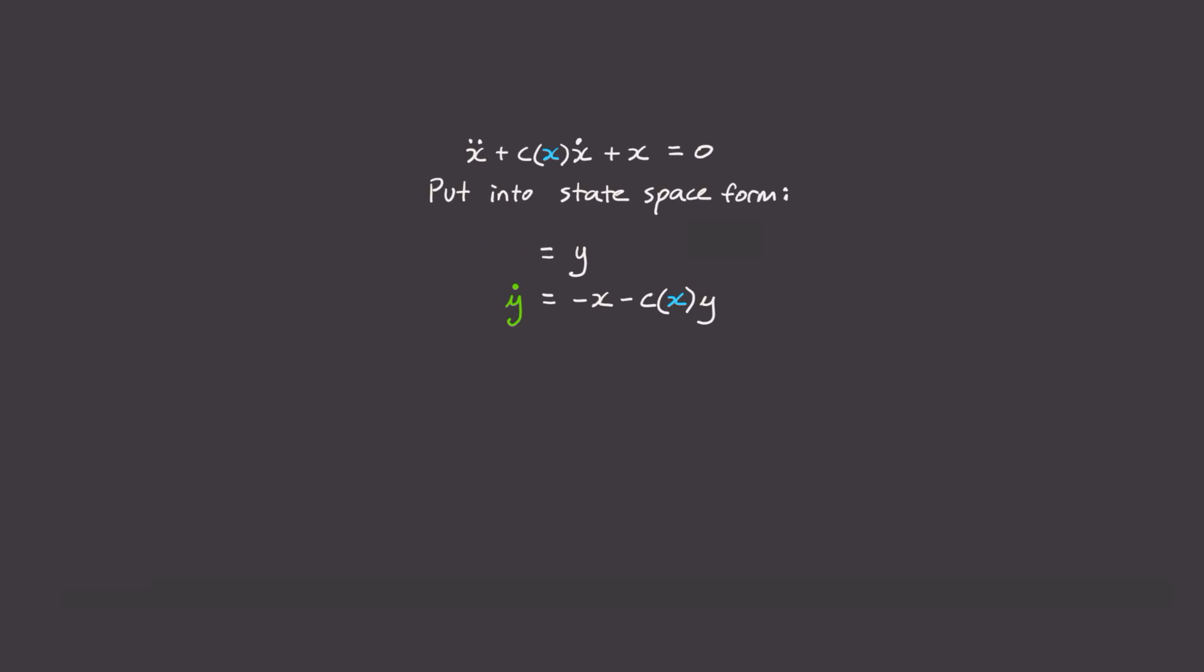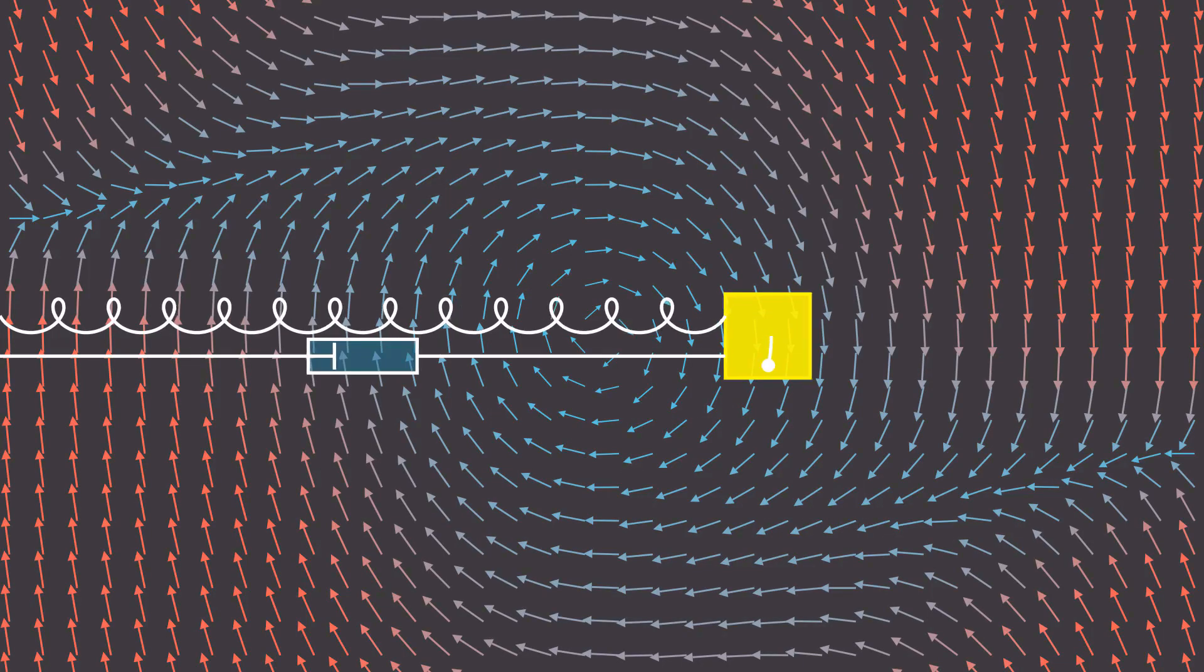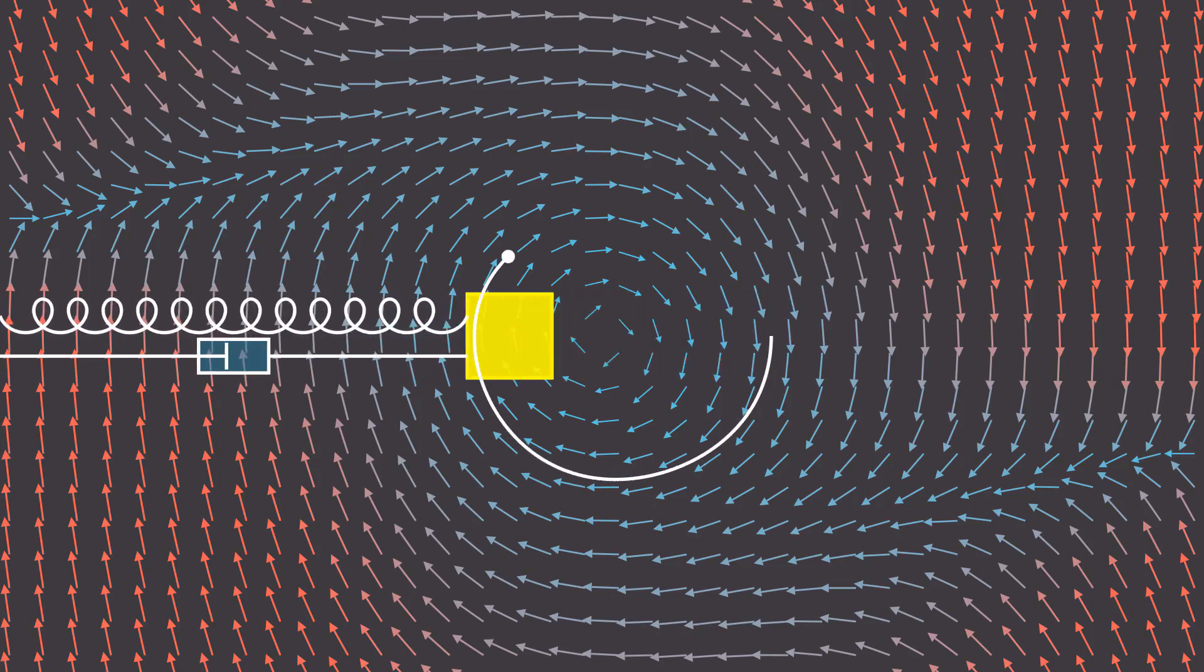Where this term here is f of x, y, and this term here is g of x, y. Now let's look at the term del f del x plus del g del y, which is 0 minus c of x, which must be less than 0. And because this must be less than 0 for all x and y, therefore we know it's impossible for periodic solutions to exist. This spring mass damper system will never oscillate back to the same point.